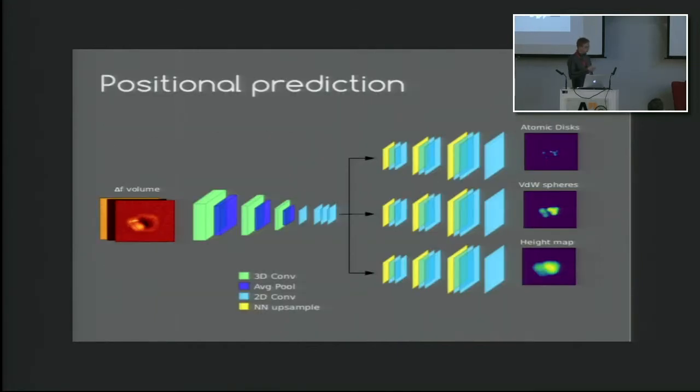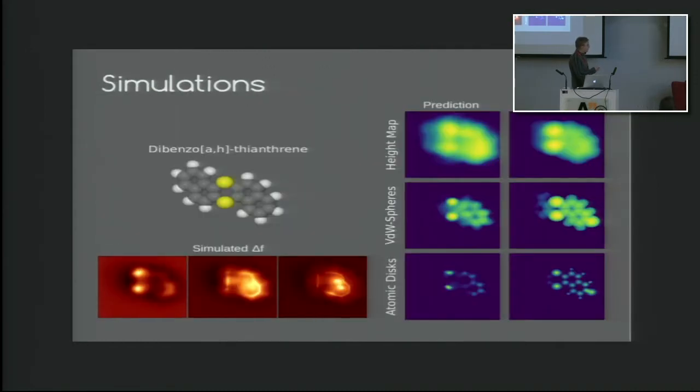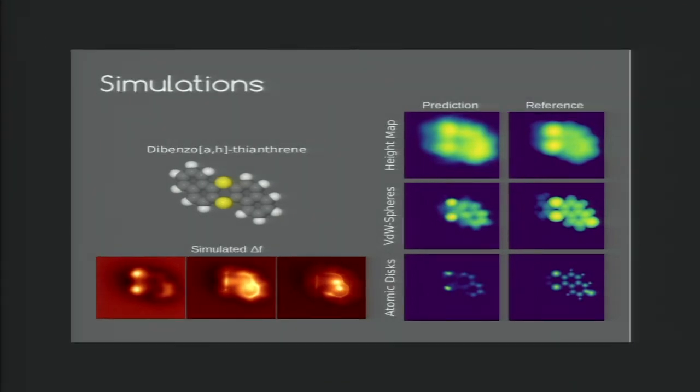Now for some results. For the positional or spatial predictions, we actually split the decoder part of the model into three different parts, each of which decodes a different descriptor. And I chose just one molecule here, triptycene, to illustrate the kind of things that this model can do well and maybe not so well. Comparing the prediction with the reference, we can see that there's remarkable similarity between the two. We can see clearly, for example, the carbon rings in the Van der Waals spheres representation.